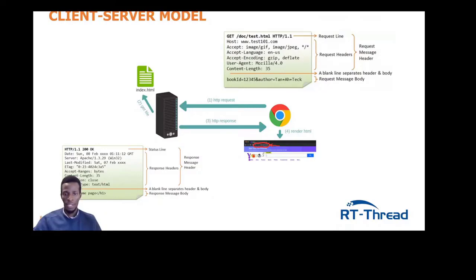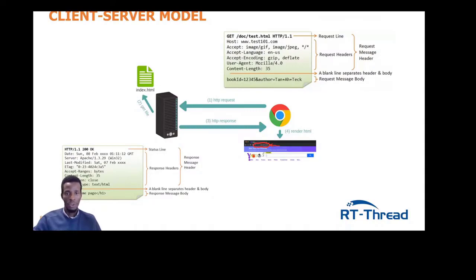HTTP is a connectionless protocol — after a client makes a request and the server receives it, the client disconnects. A new connection must be initiated for the response to reach the client. HTTP is also stateless, meaning two computers that have connected before must start from the beginning when reconnecting. HTTP can deliver any sort of data — HTML files, text files, images, and so on.